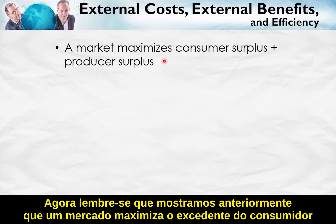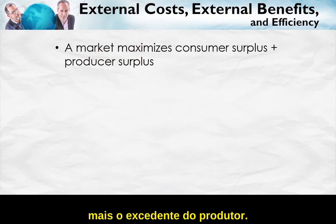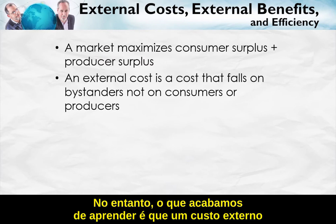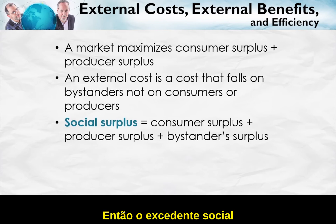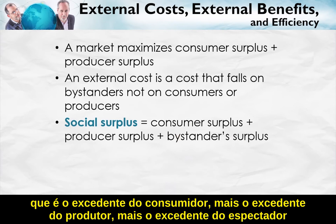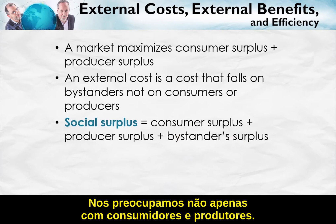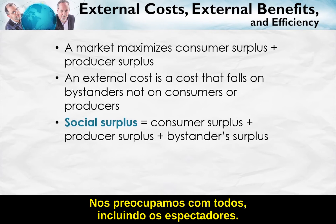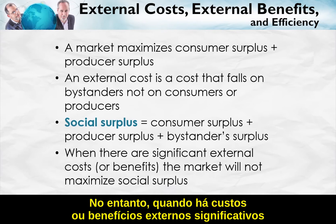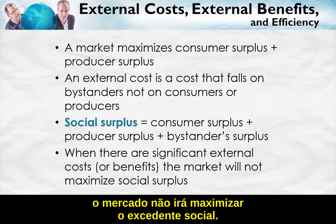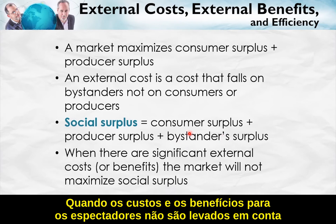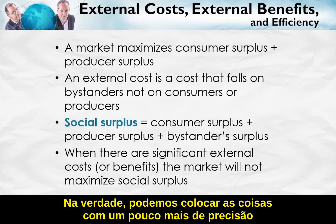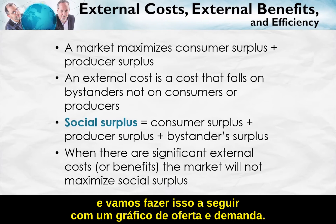A market maximizes consumer surplus plus producer surplus — that's always true for a free market. However, an external cost is a cost that falls on bystanders, not on consumers or producers. Social surplus — which is consumer surplus plus producer surplus plus bystander surplus — is ultimately what we really care about. We care about not just consumers and producers but everyone, including bystanders. When there are significant external costs or benefits, the market will maximize consumer surplus plus producer surplus, but not social surplus, since the costs and benefits to bystanders are not counted.